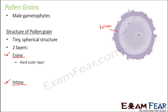The exine is the hard outer layer — it is extremely hard. Its purpose is basically to ensure protection, that is why it is rigid. What is it made up of? It is made up of sporopollenin. Sporopollenin is a chemically stable compound which is well preserved in soils and sediments. This is the composition of exine.